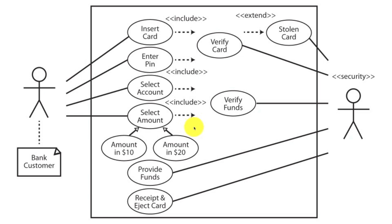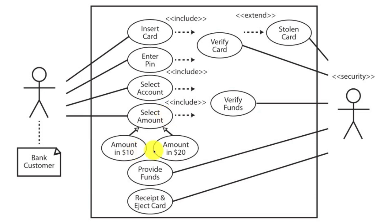Down here I'm showing you a generalization use case, using arrows just like these. So if the bank customer wants to select an amount, a more specific use case would be that they select amounts in values of $10 or $20 increments — this would be a general use case, while those would be more specific use cases. That's basically all you need to know to understand use case diagrams, except that most of the time you'll first create a use case description before drawing the diagram.